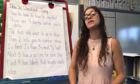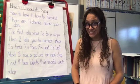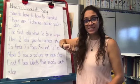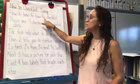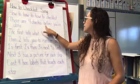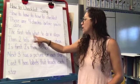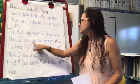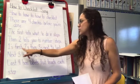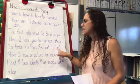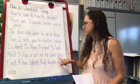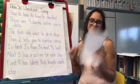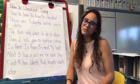Before I say goodbye, we're going to sing the song one more time. Are you ready? And I'll follow along pointing to the words. Our how-to checklist song. How-to, how-to, how-to checklist. There are four checks before you're done. The first tells what to do in steps. Then two tells you to number steps. One's first, two's then, three's next, four's last. Next three has a picture for each step. Last four has labels that teach each step. How-to, how-to, how-to checklist.